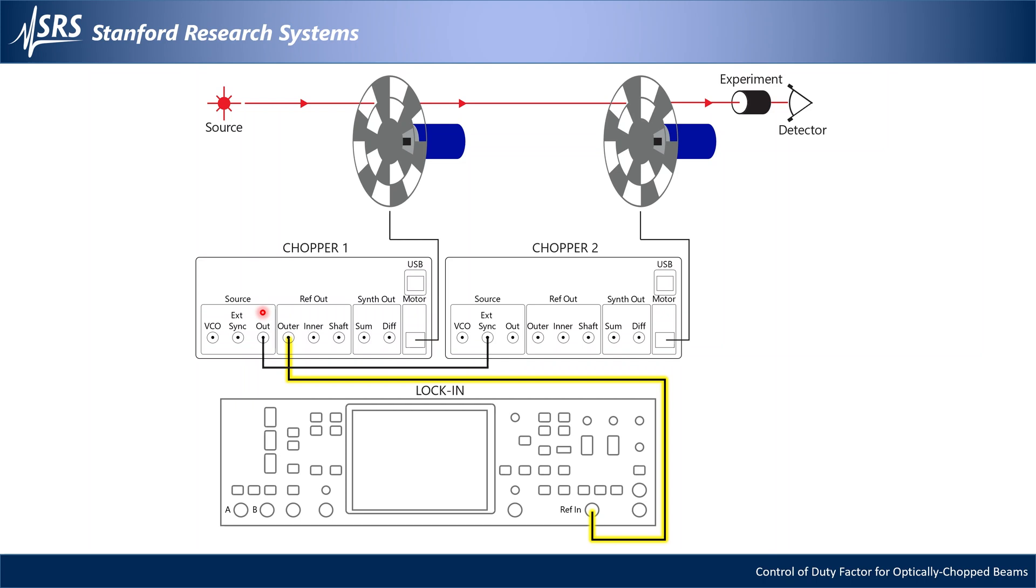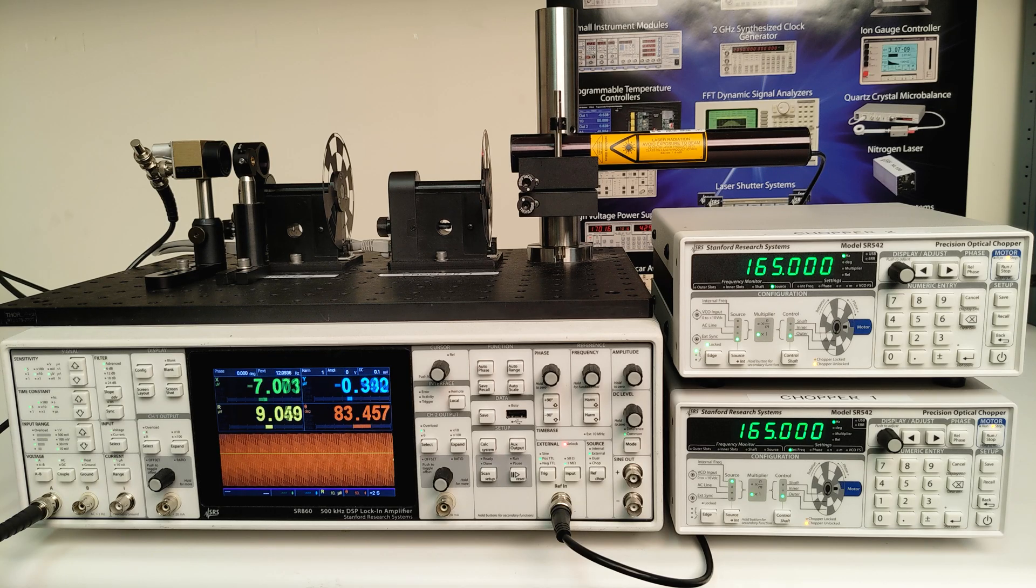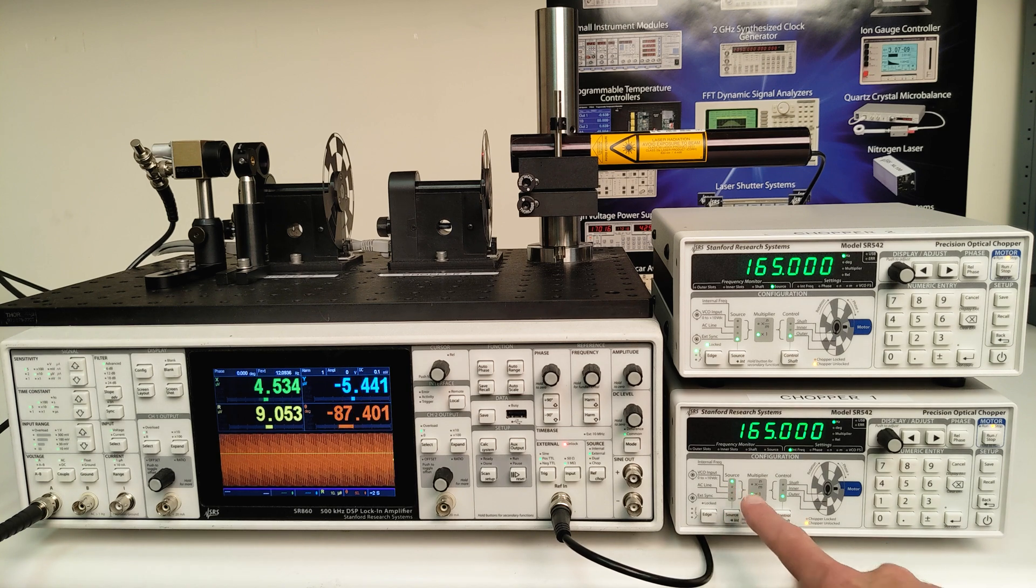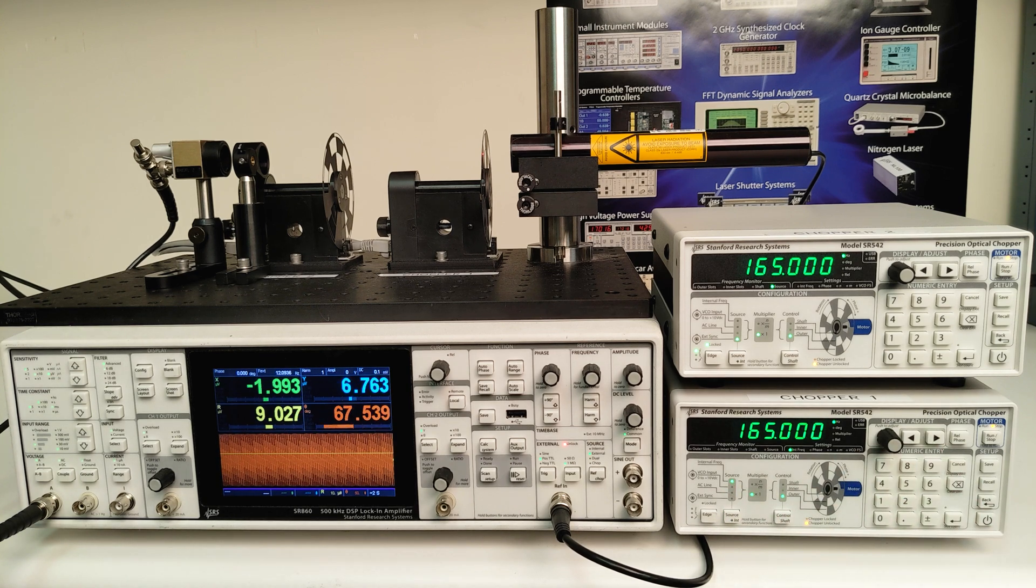The connection between chopper 1 and chopper 2 is unchanged, so that chopper 2 can be synchronized via its external sync input. Therefore, chopper 1 remains the primary timekeeper, with its frequency source set to internal and a setpoint frequency of 165 Hz.